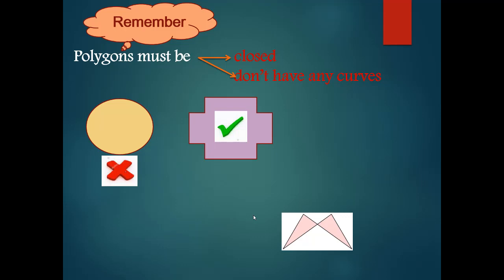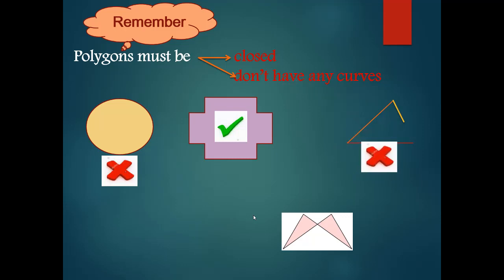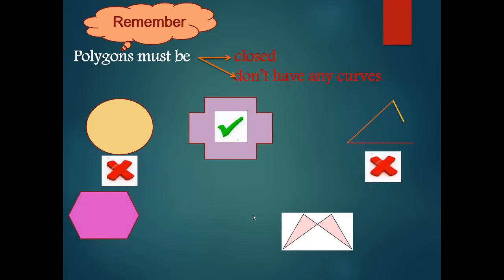Okay. Another one — is this a polygon? No, teacher. Why? Because it's open. Okay, it's not a polygon. Another one here, my students — is this a polygon? Yes. This polygon is closed and formed from three line segments or more and doesn't have any curve.